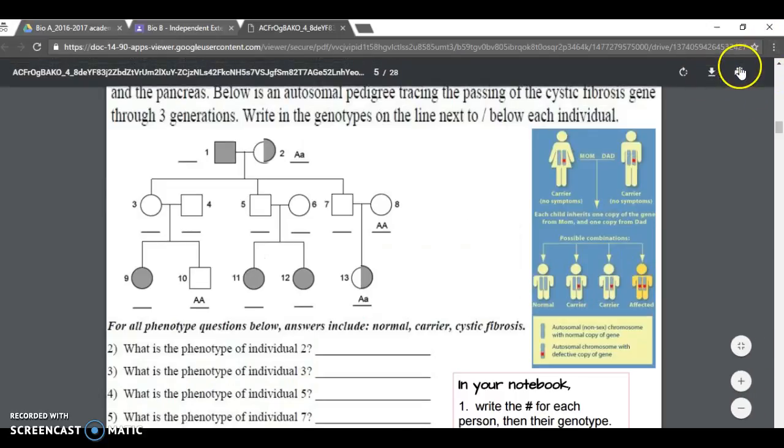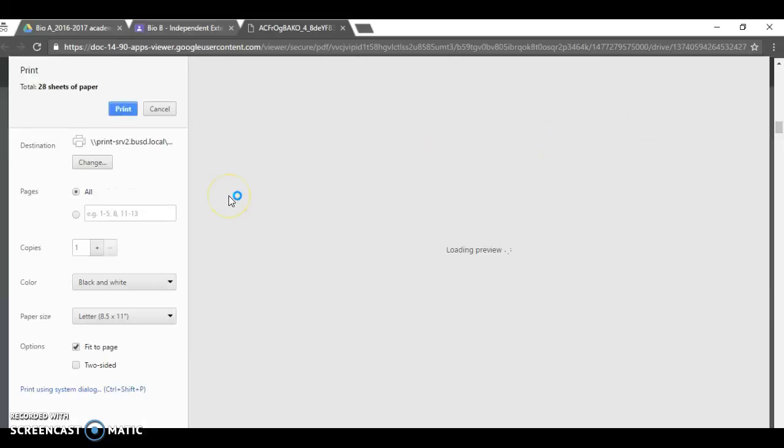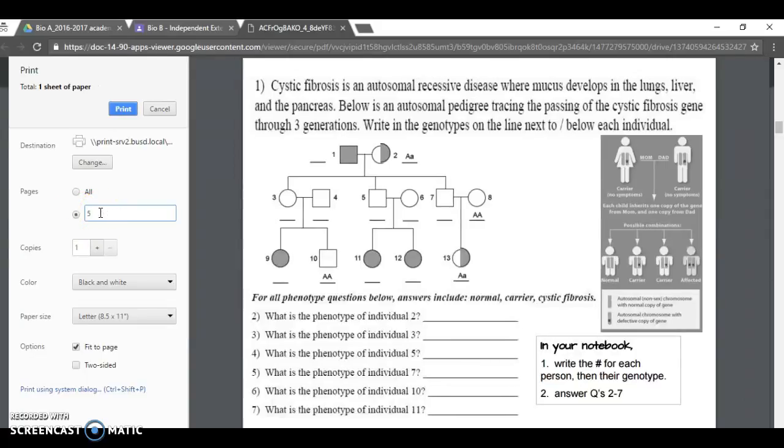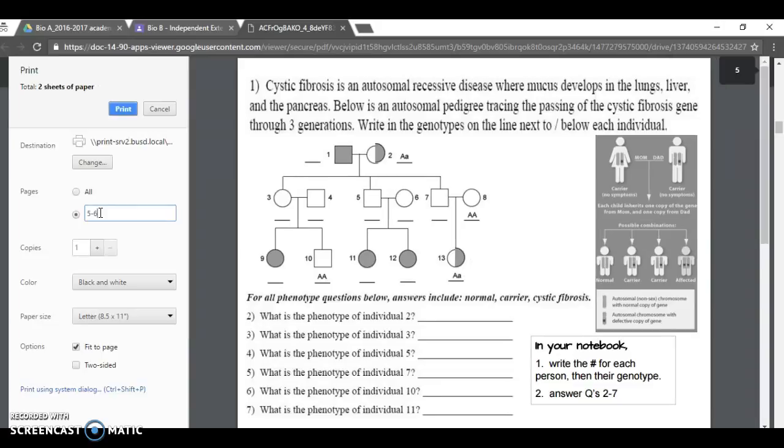I'll show you how to print two slides if you want, and I'll even show you how to do front and back so you don't waste paper. You're going to come over here, there's a little print icon here you can use that. And it says pages here, this is where you're going to select slides five and six.